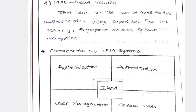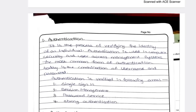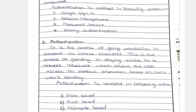IAM answer and SOAP answer are easy — you can write them. Prepare any two topics out of HTTP, SOAP, and IAM. The components of IAM are: authentication, authorization, user management, and central user repository. Authentication is sign-in with password service — it manages and stores passwords. Authorization is role-based, rule-based, or attribute-based — granting or denying access.